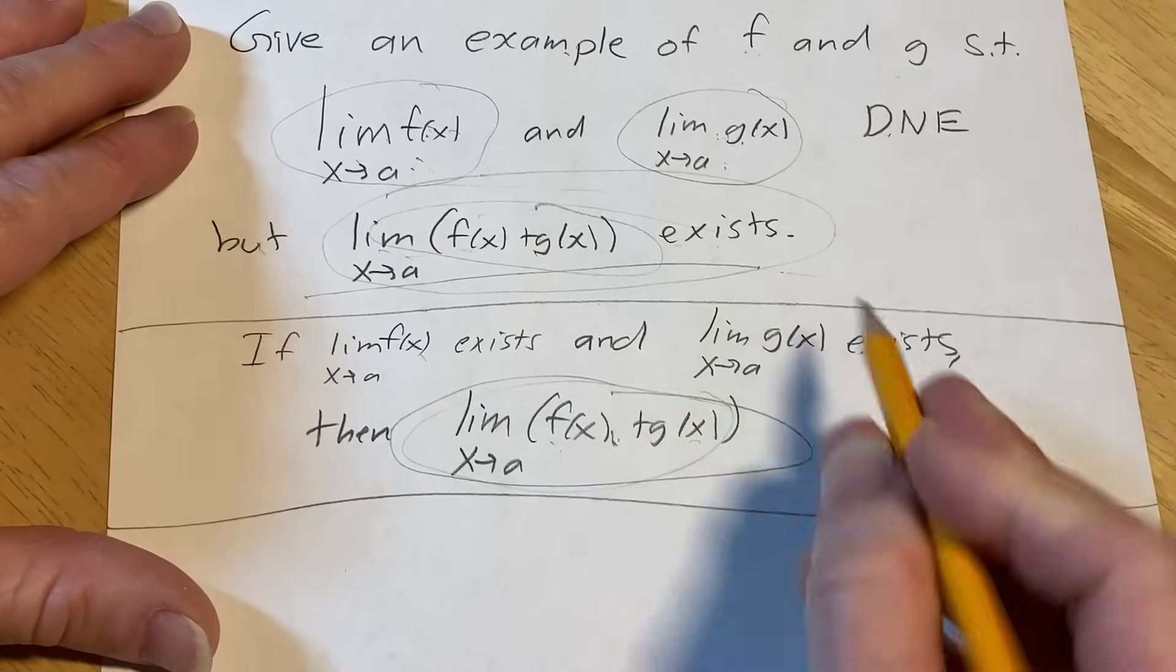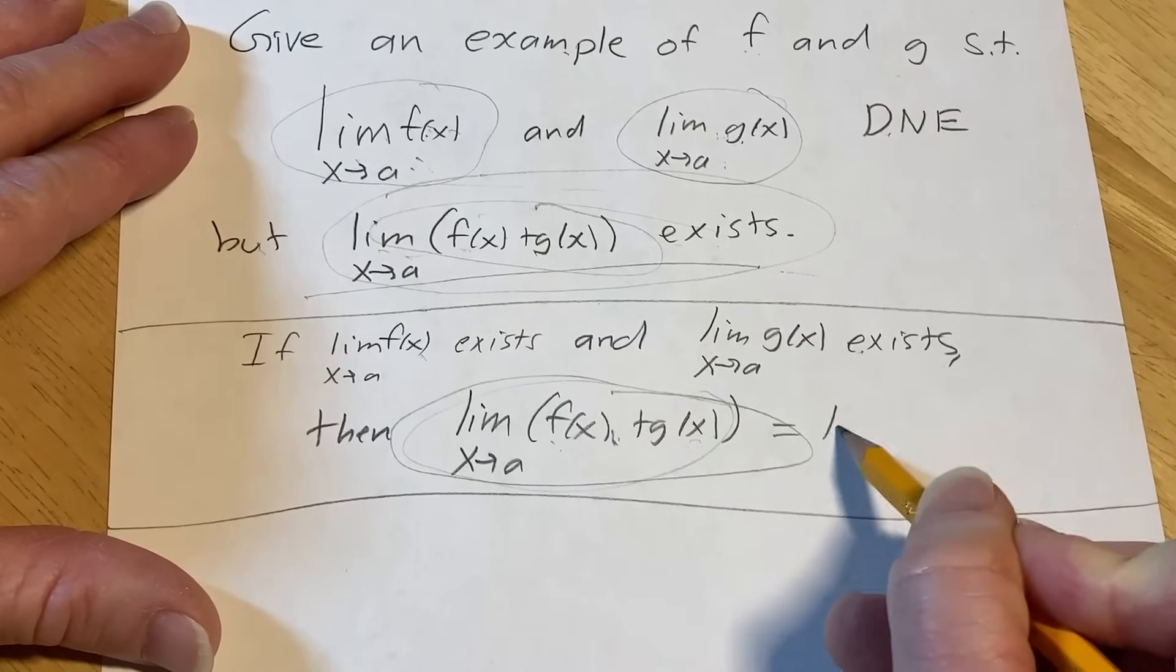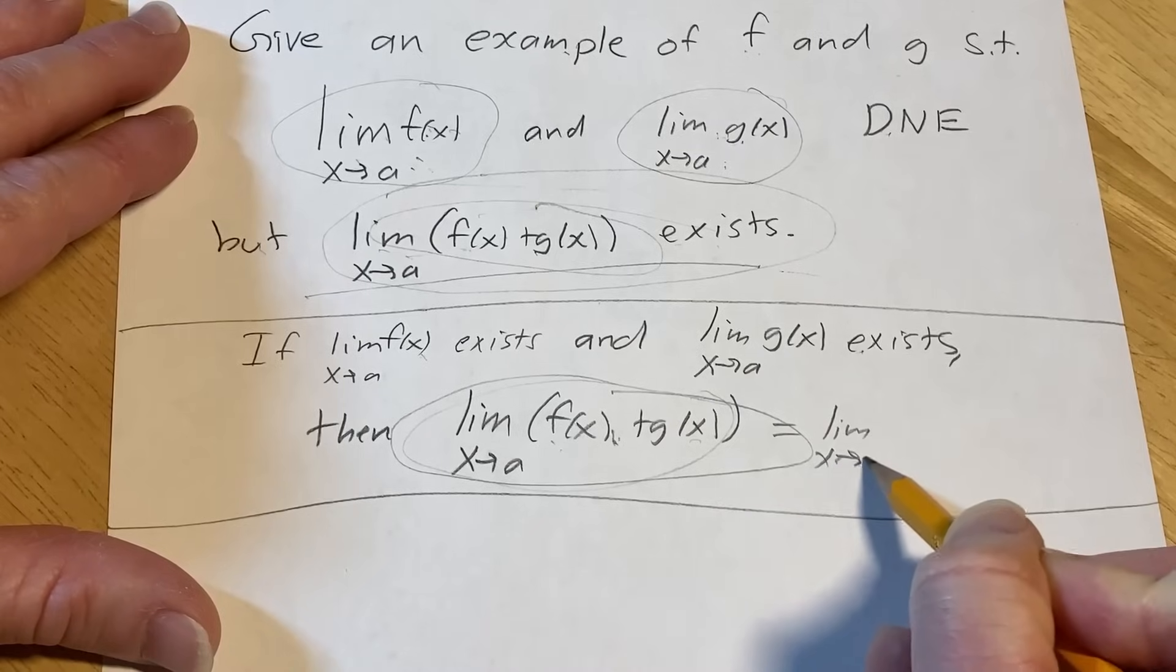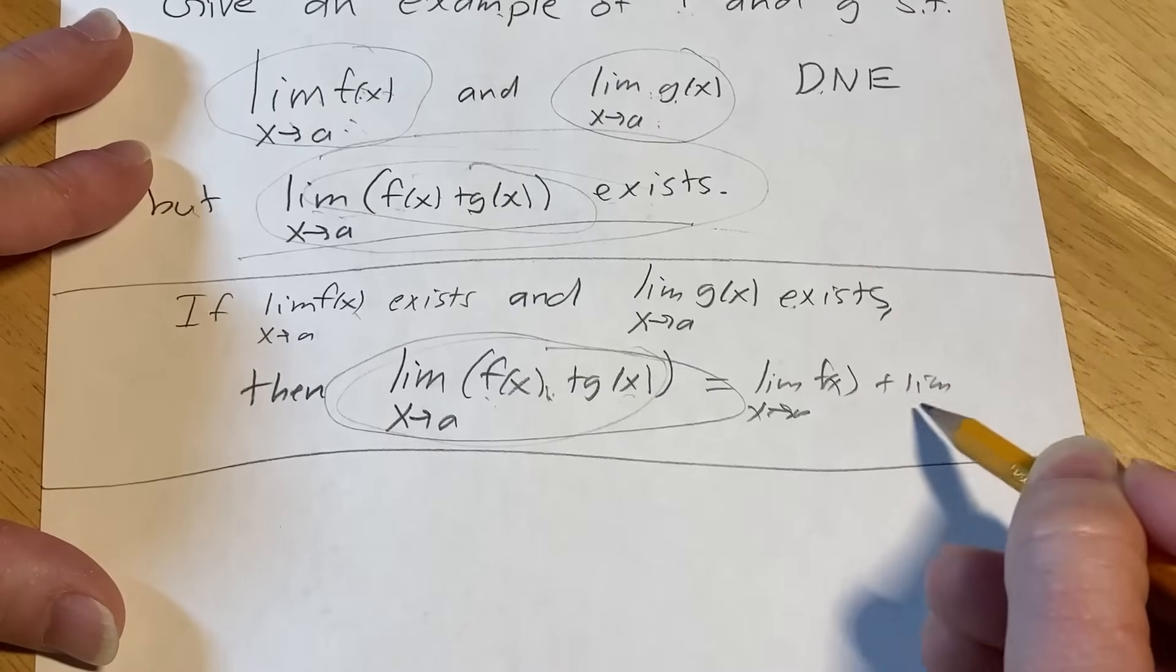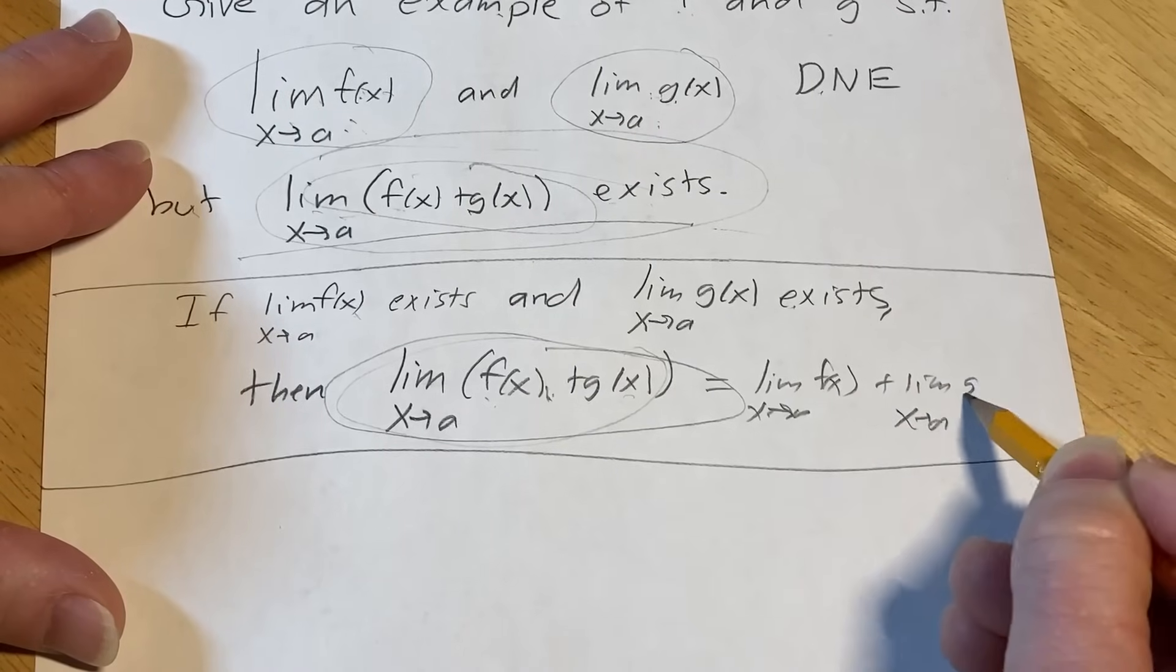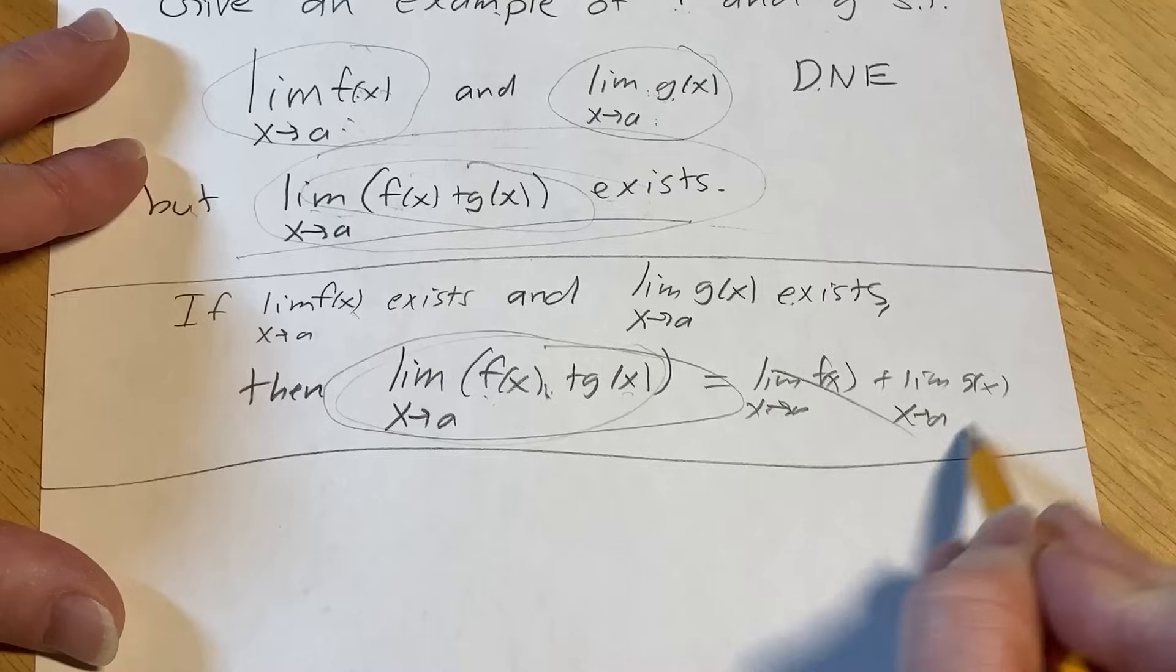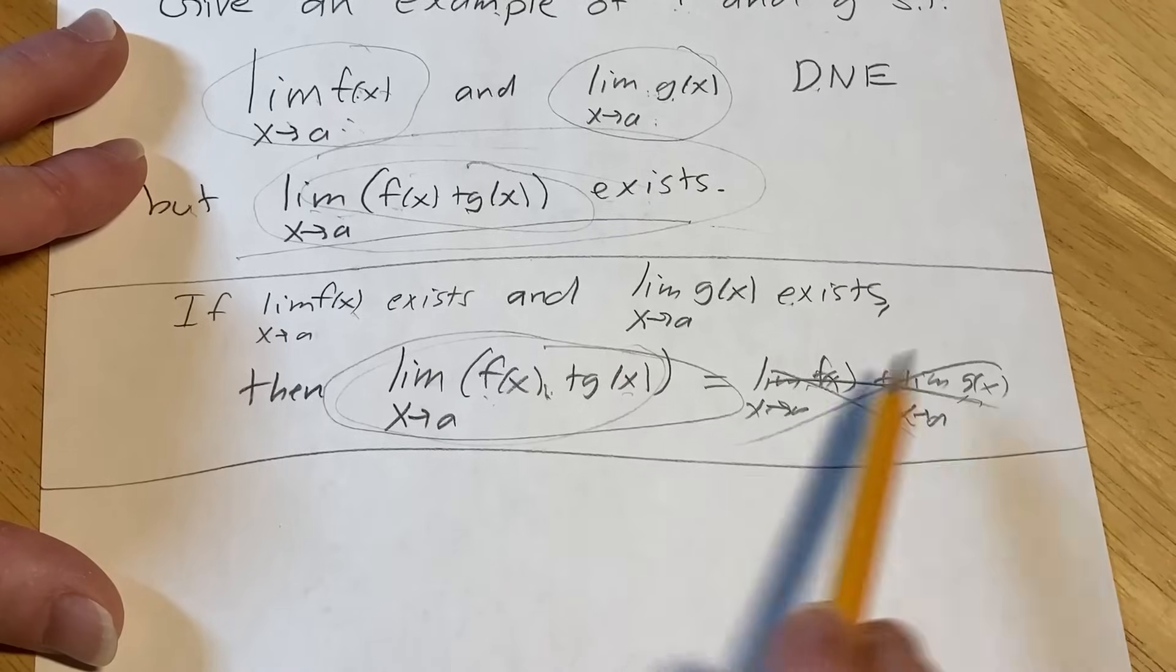Just because this exists, you can't do this. You can't say, oh, this is equal to limit x approaches a f of x plus limit x approaches a g of x. You can't do that normally. You're not allowed to do that unless the individual pieces exist.